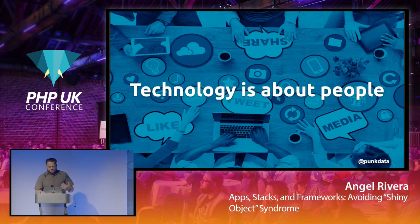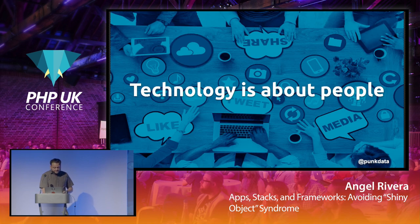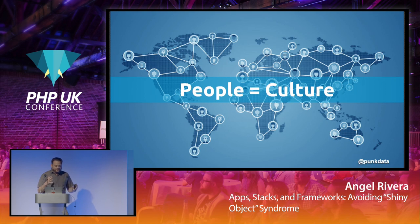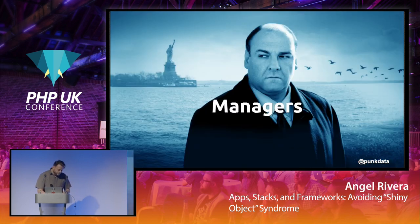Technology is about people. It helps our lives, brings convenience, lets us do things consistently and in a stable manner. When you have people involved, that usually means there's a culture forming. Cultures generate attitudes, help people form bonds, and bring people together to work toward a certain goal.